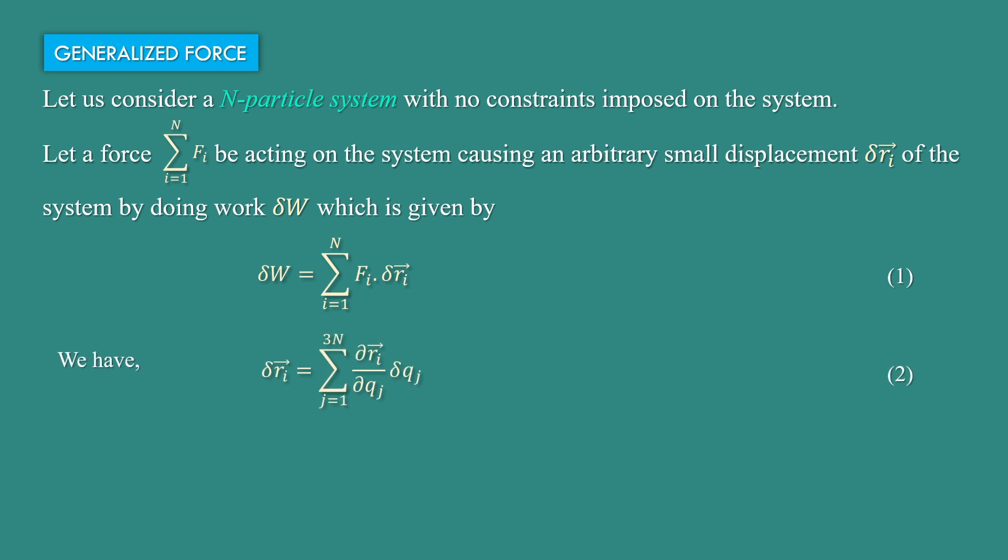We have δri, the displacement, equal to Σ(j=1 to 3n) (∂ri/∂qj)δqj.